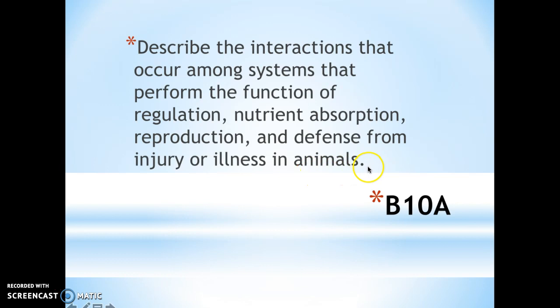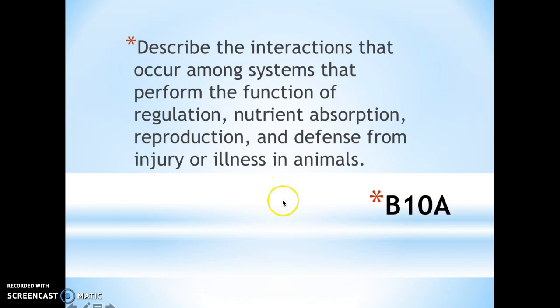What you have to be able to do is know how, or be able to describe how, different body systems interact with one another in order to do the functions that they do. So we're going to focus on writing down the functions of each body system, but at the same time, make sure that you pay close attention to how these body systems interact with one another. I have already included the interactions, so you need to make sure that you practice those interactions, especially the ones that you perhaps are not too familiar with. So we're going to go ahead and jump in.